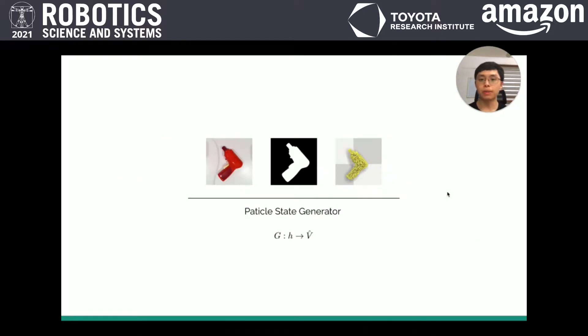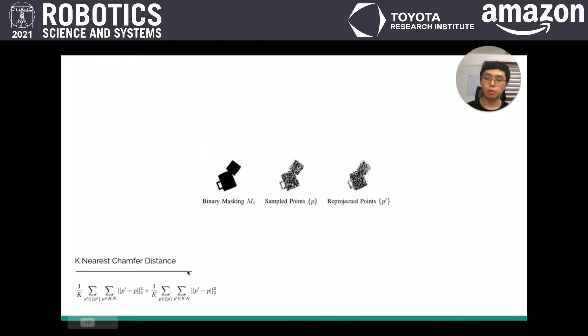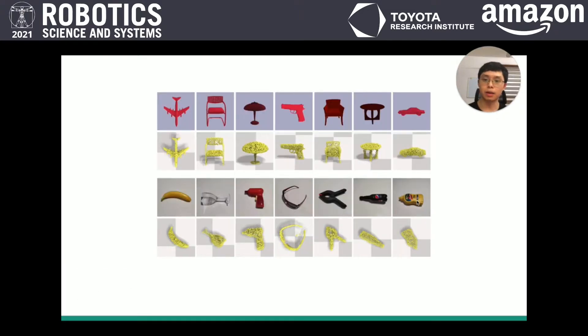So how does the particle generator work? The key is to perform the k-nearest chamfer distance, which minimizes the distance between two sets of points: between the sampled points from the ground-truth masking images and the re-projected points from the reconstructed particle states. By minimizing the distance, we can easily reconstruct the particle representation with multi-view perceptions. Here are some examples. We can tell that it works not only in the simulator, but also in the real world.